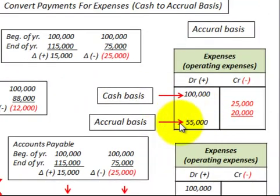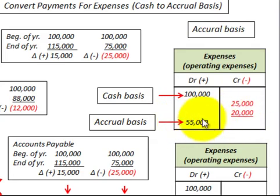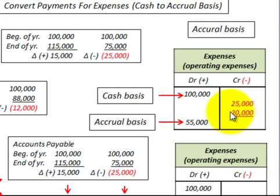To determine our accrual basis, we take our cash basis debit amount of $100,000 — those are the cash payments made for the year — then reduce it by the credit amounts: the $25,000 reduction in accounts payable and the $20,000 increase in prepaid expenses. The resulting balance is our accrual basis: $55,000, which is $100,000 minus $25,000 minus $20,000.